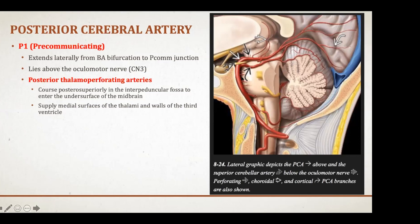The vertebral artery becomes the basilar artery. The superior cerebellar artery also arises here. On this sagittal view of the brain, you can see the posterior cerebral artery coursing right above the third nerve. It has important branches — the posterior thalamoperforating arteries — which supply the thalami bilaterally and the walls of the third ventricle.